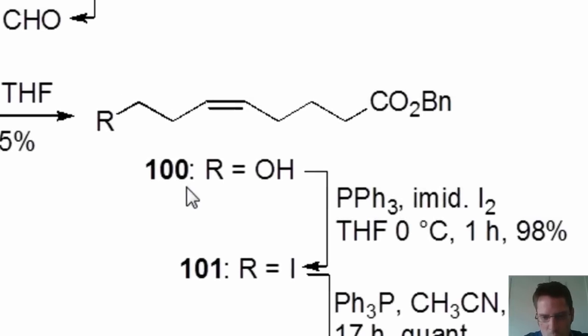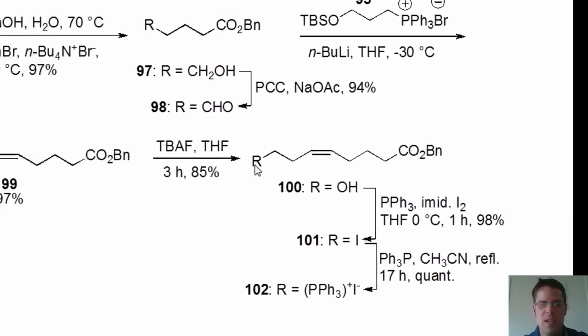The only reason I'm pointing this out is because of one thing. You'll notice as we look from molecule 100 to 101 that 100 has an OH here, and it has been converted into a molecule that has an iodine here. In other words, the iodine has taken the place of the OH, moving from 100 to 101. What type of reaction is that? Absolutely. It's a substitution reaction.